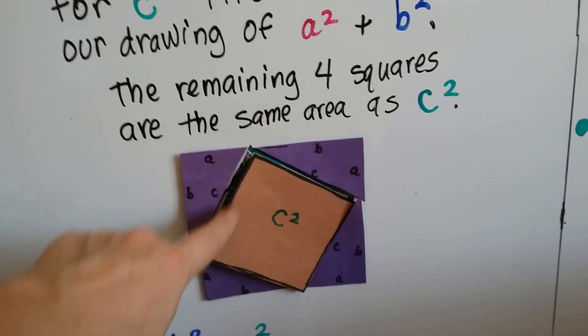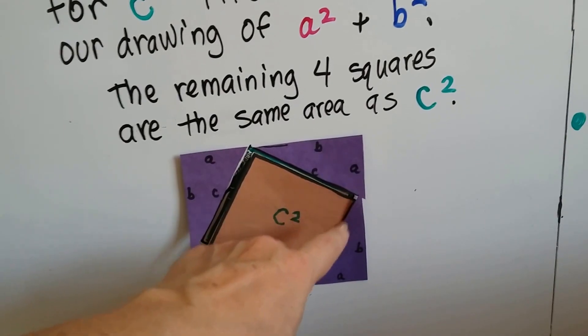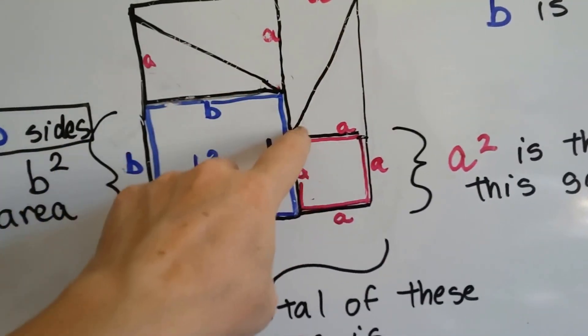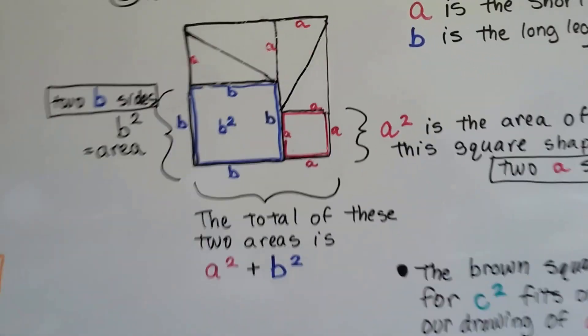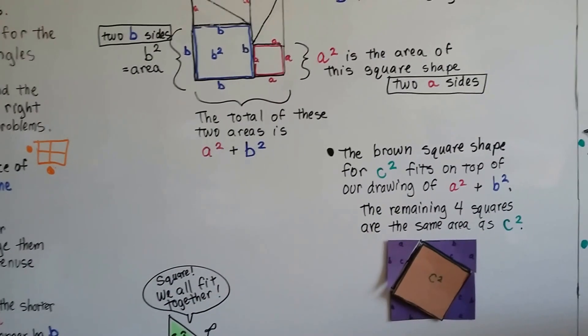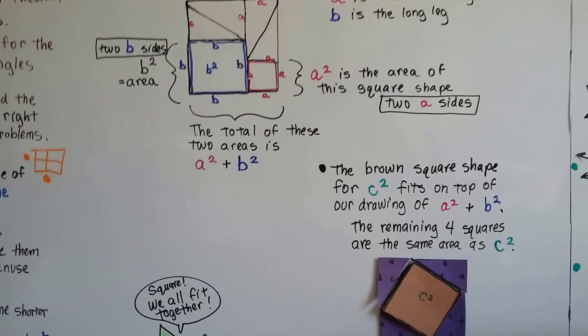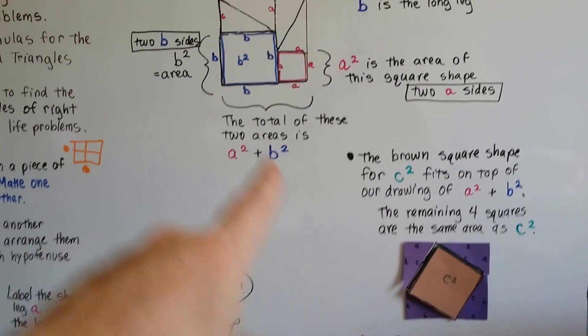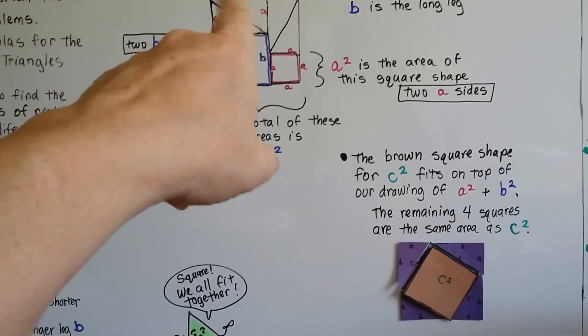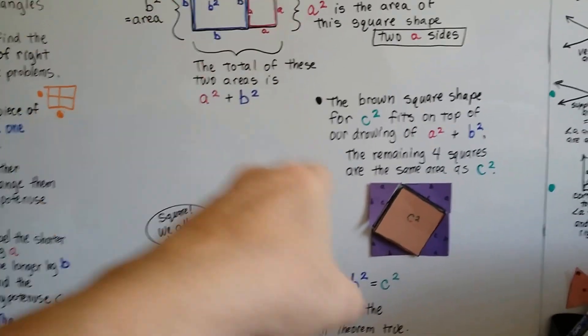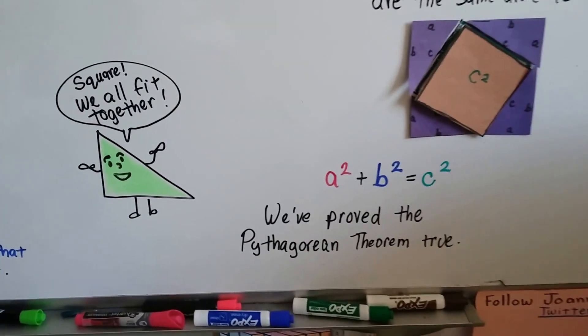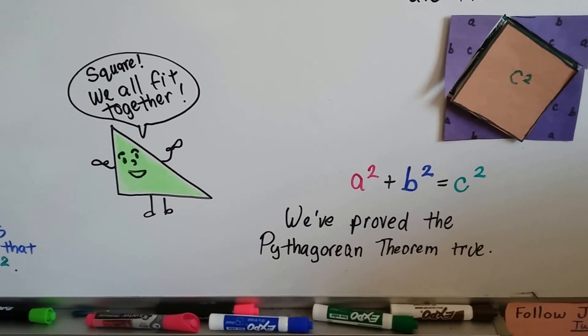And all of these C sides, one side, another C side, another C side, another C side, the four hypotenuse. There's a hypotenuse here and a hypotenuse here, a hypotenuse here and a hypotenuse here. So we've actually proved the brown square shape for C squared fits right on top of our drawing over here. And the remaining four squares are the same area as the C squared. So A squared plus B squared equals C squared. We proved the Pythagorean theorem is true.